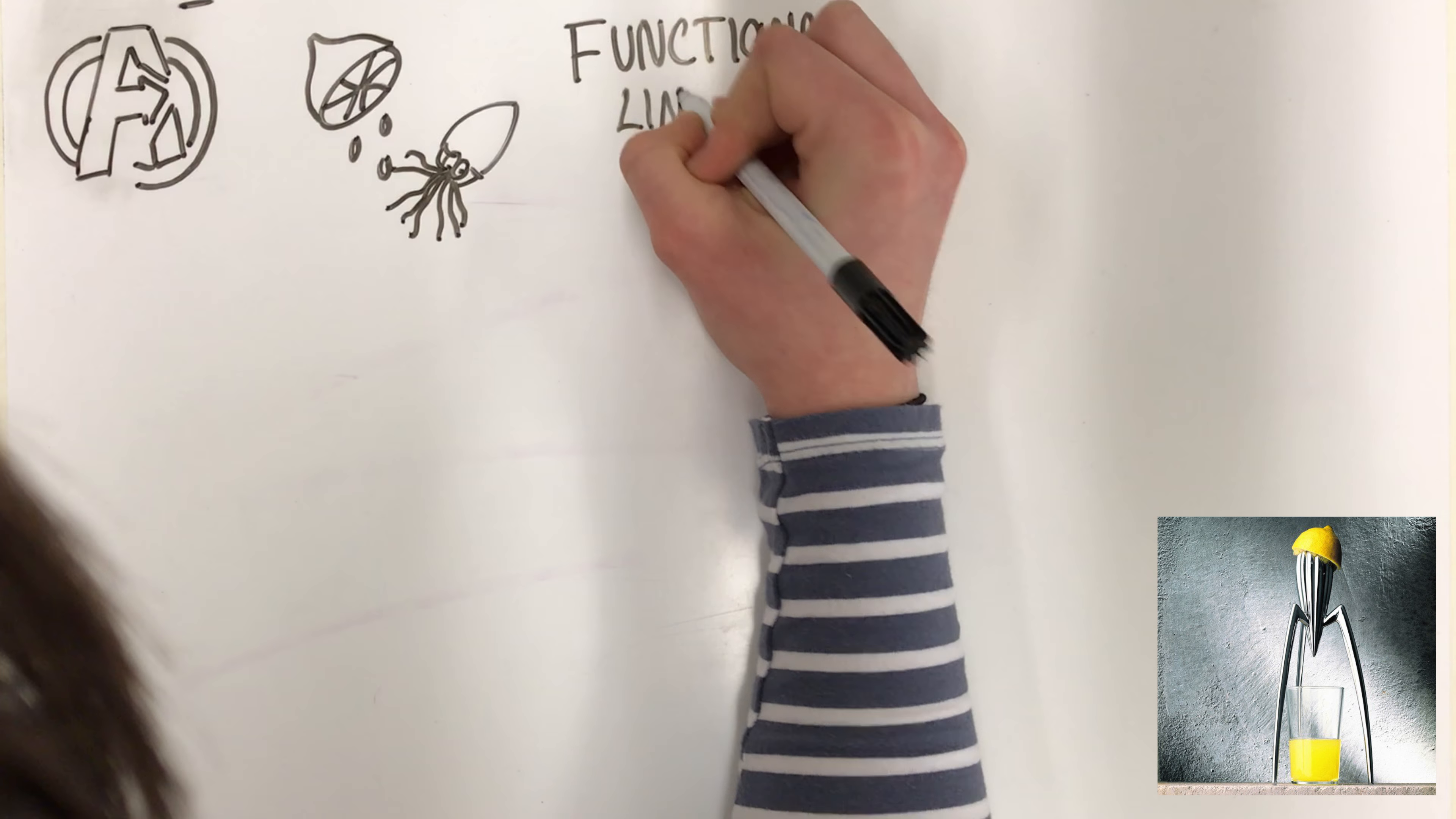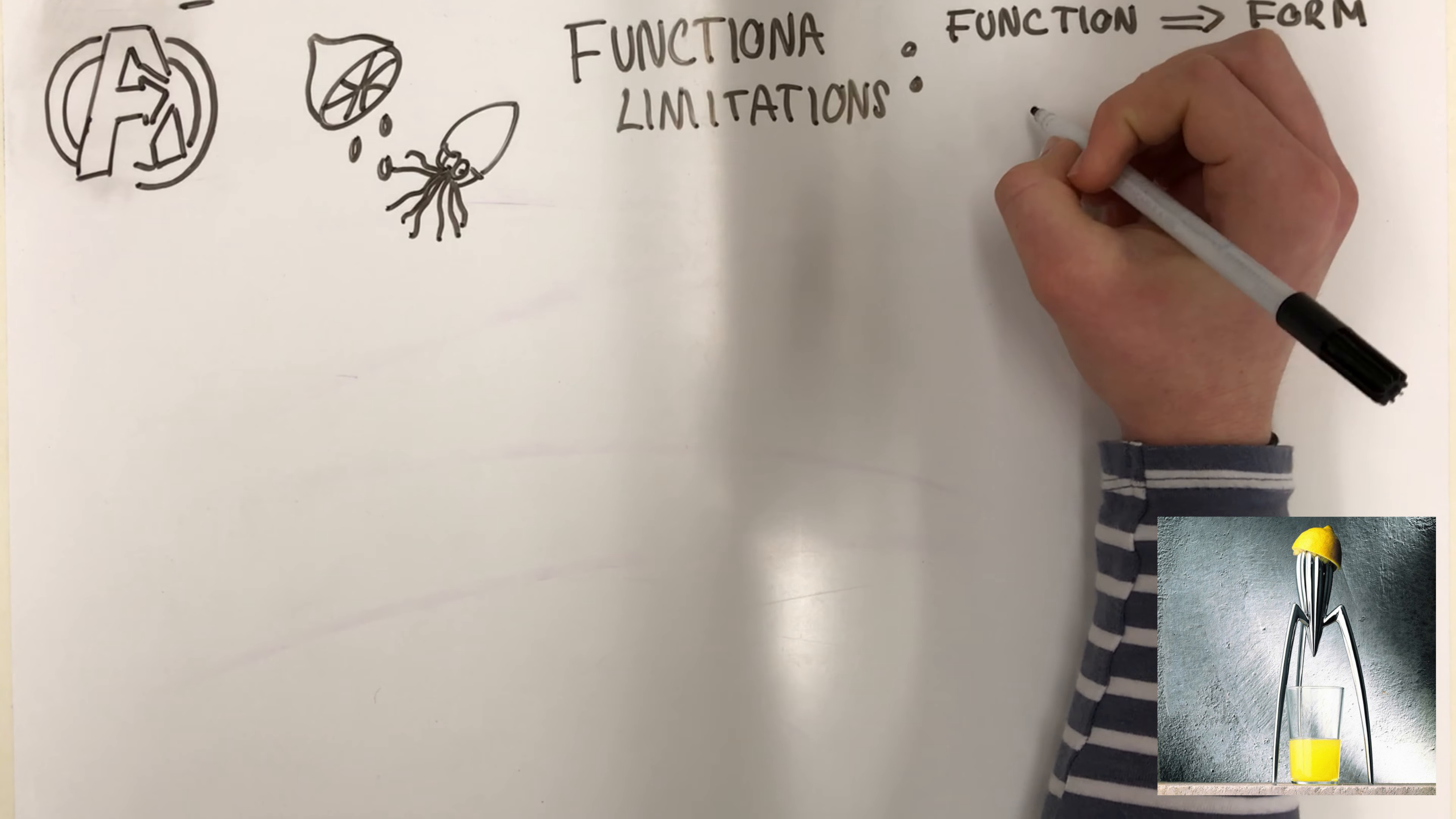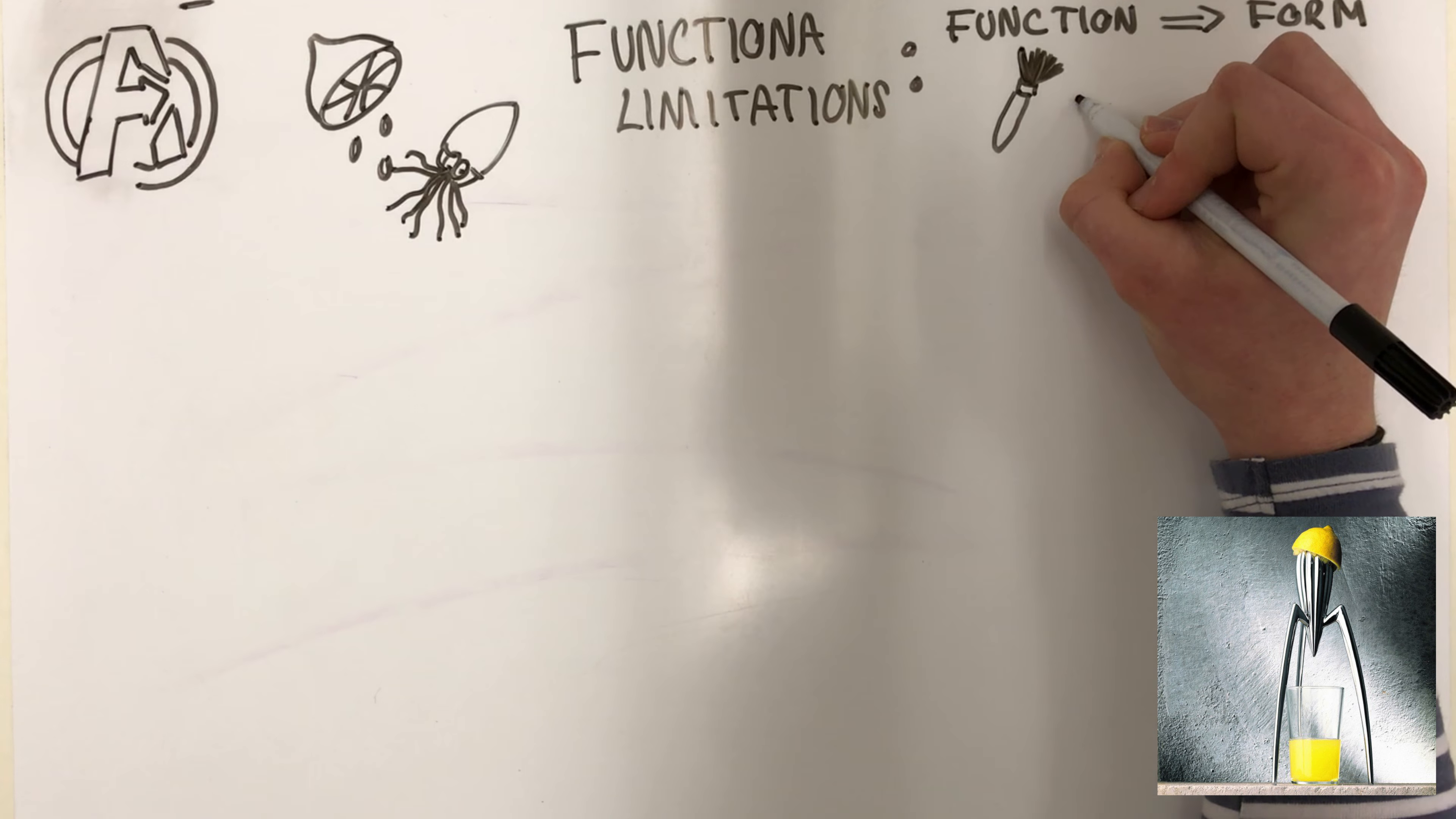Functional limitations. The product has been designed following function follows form, meaning the product has been made to look pretty before making it function properly.